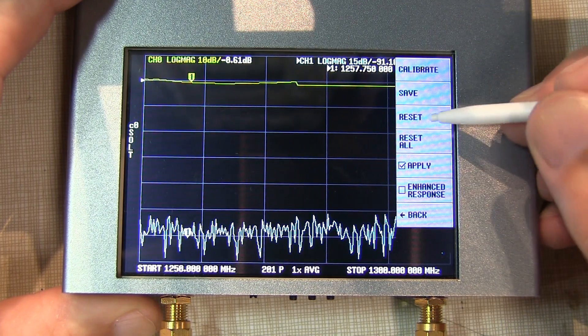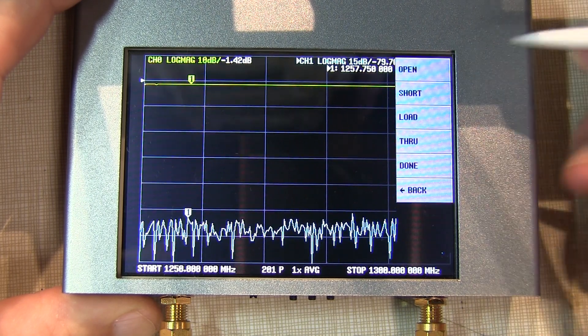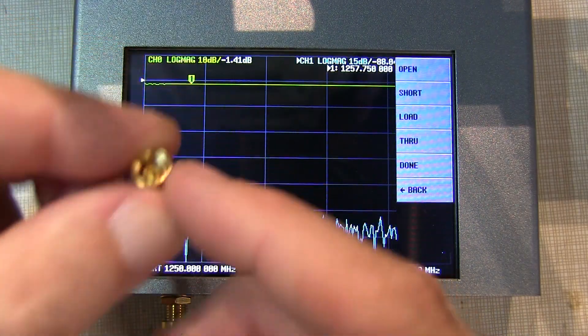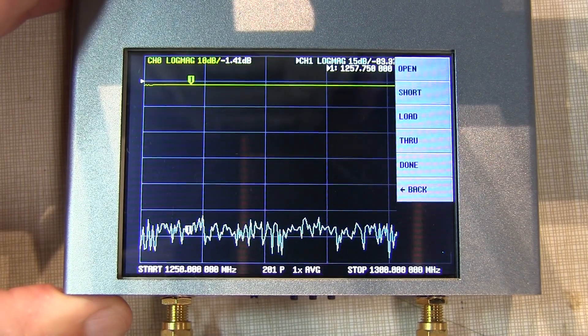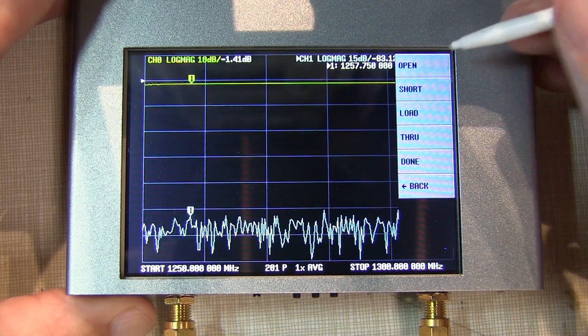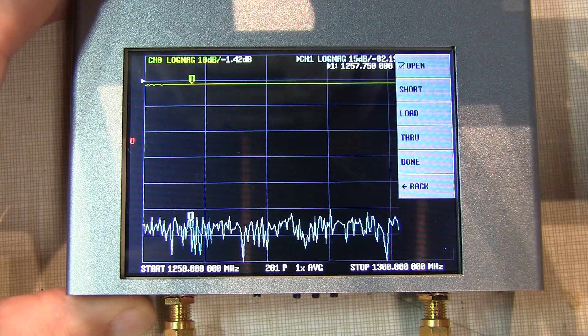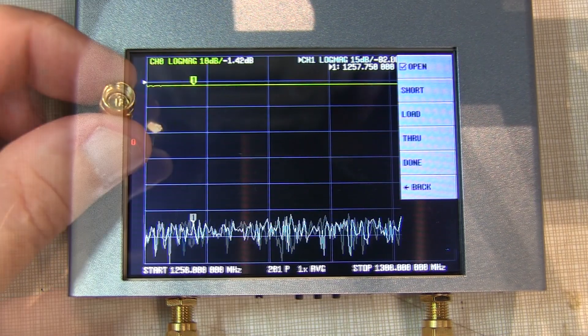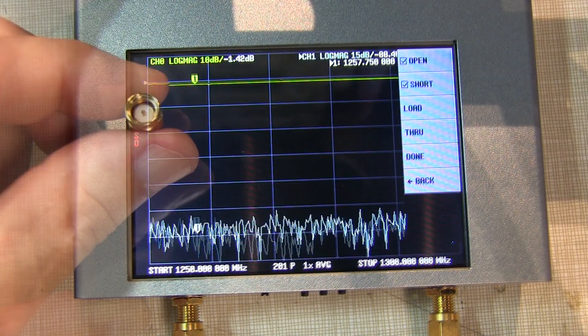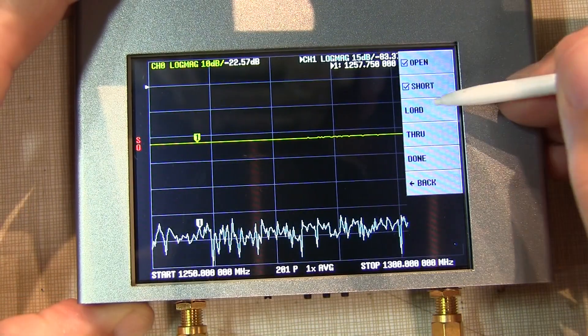In the calibration menu, we start by hitting reset to clear out the current calibration, then hit calibrate. We'll start by calibrating with the open on port 1. Hit open and the open cal is done. Next we'll calibrate the short, touch short. Now we'll calibrate with the load and touch load.